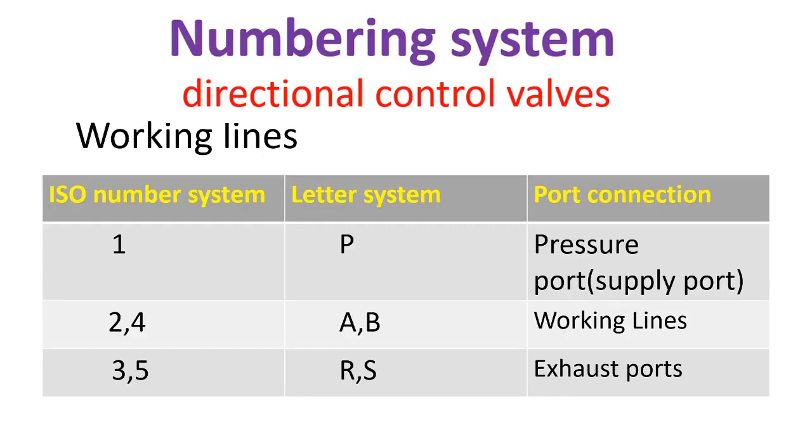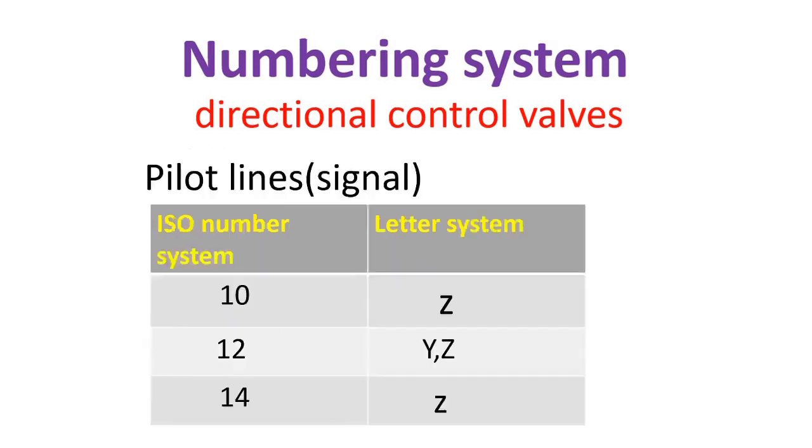For number 1 and letter P, that is pressure port or supply port. For number 2 and 4 or A and B, that is working lines. For number 3 and 5 or R and S, that is exhaust ports. And for our pilot lines or signal, 10 is equivalent to Z, 12 is equivalent to Y or Z, 14 is equivalent to Z.